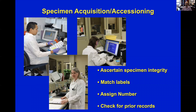While accessioning a specimen when it arrives, you obviously ascertain specimen integrity and match up labels. It'll probably get some kind of a case number in your lab, and then you check for prior records. If you have done the flow cytometry before, or you have any clue about the diagnosis and what is being suspected, that is good to have — particularly with minimal residual disease or follow-up specimens to detect disease. It is good to have the immunophenotype of the original tumor.